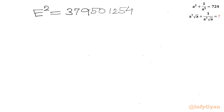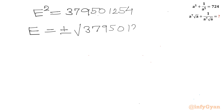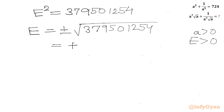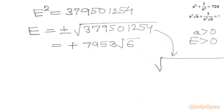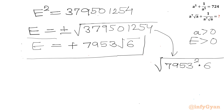Taking the square root, E = ±√379,501,254. Since a is positive, E must be positive. This value simplifies to 7953·√6, confirming: E = √(7953²·6) = 7953·√6. Our final answer is 7953√6.